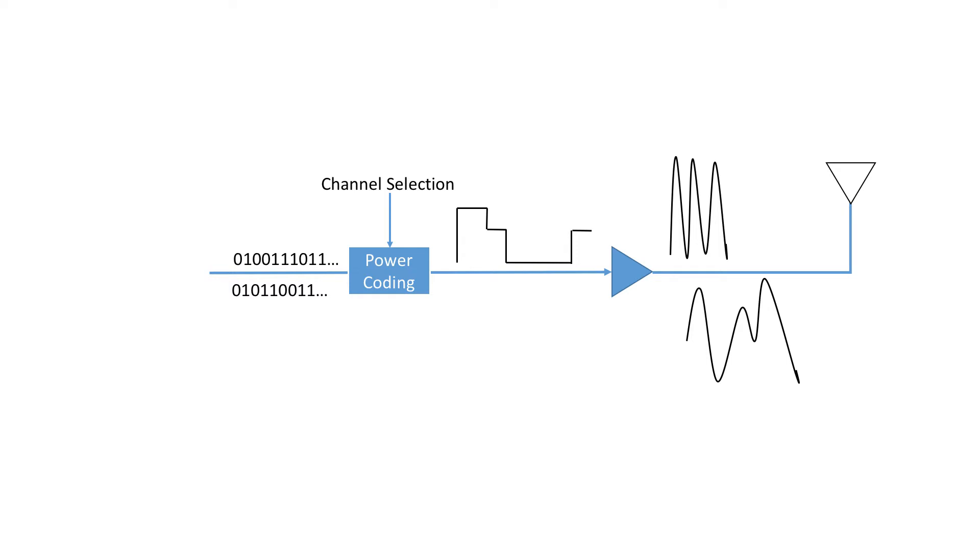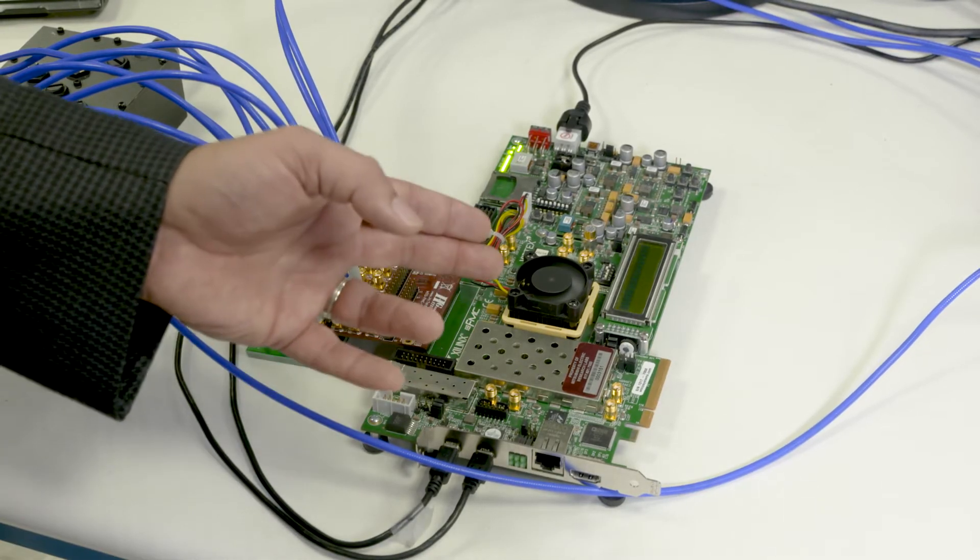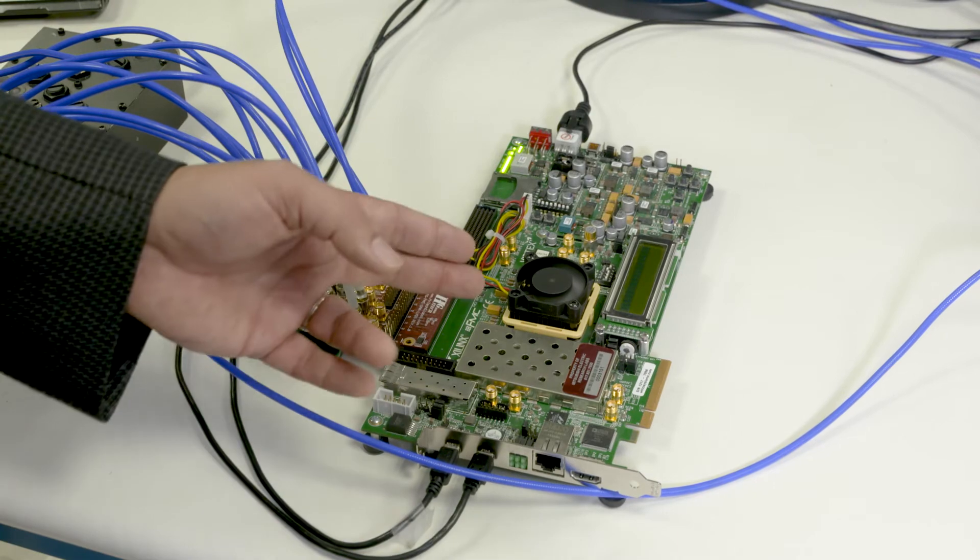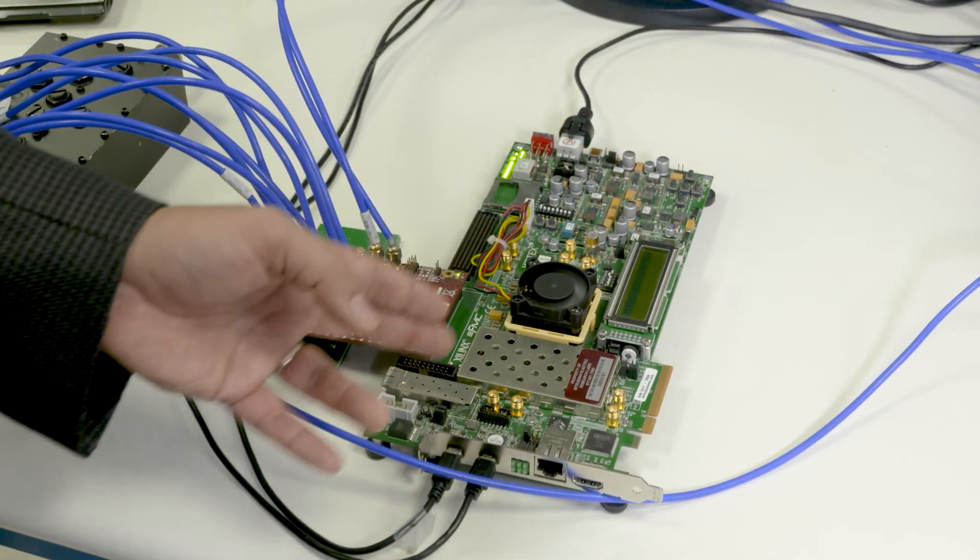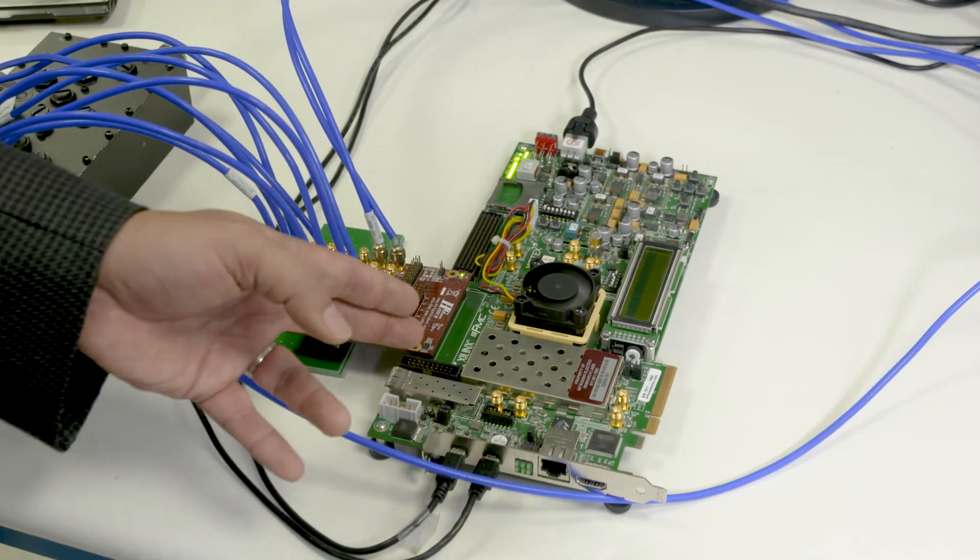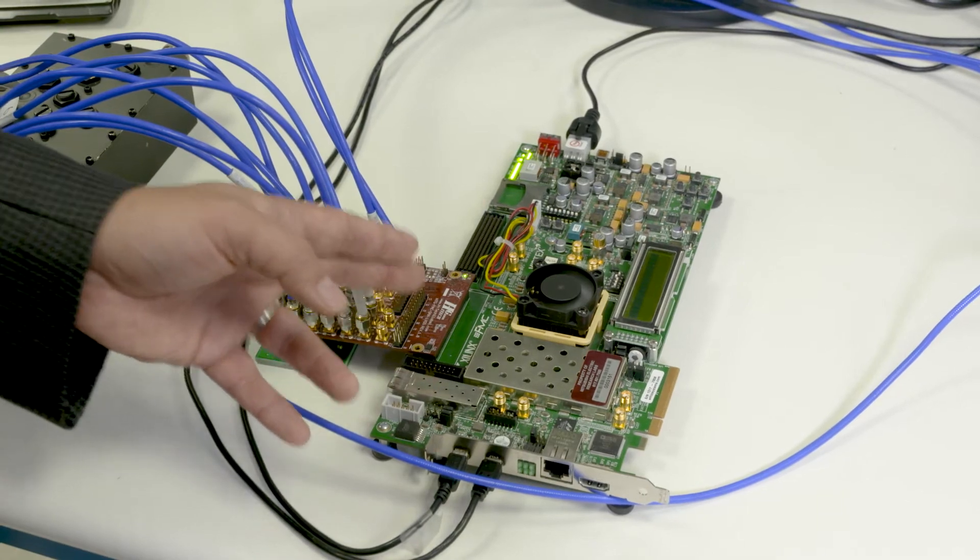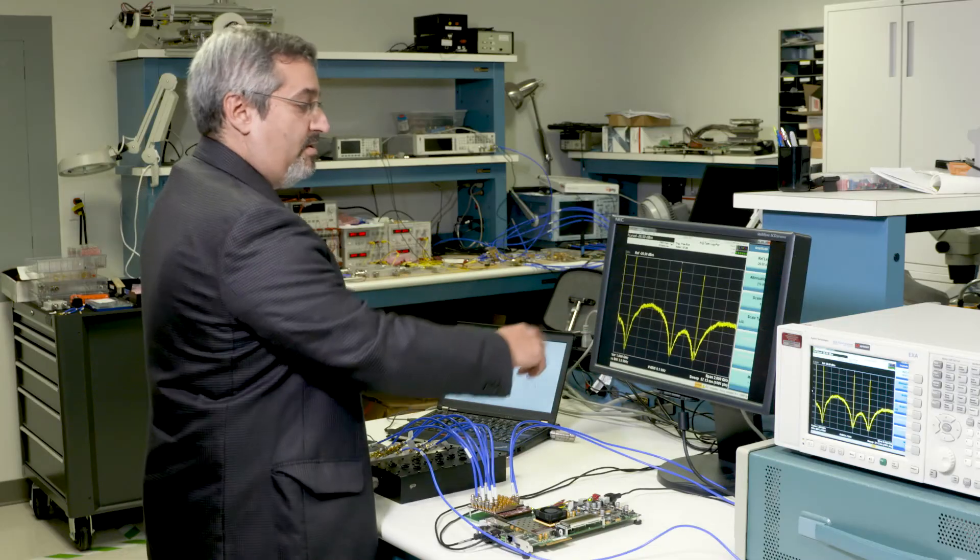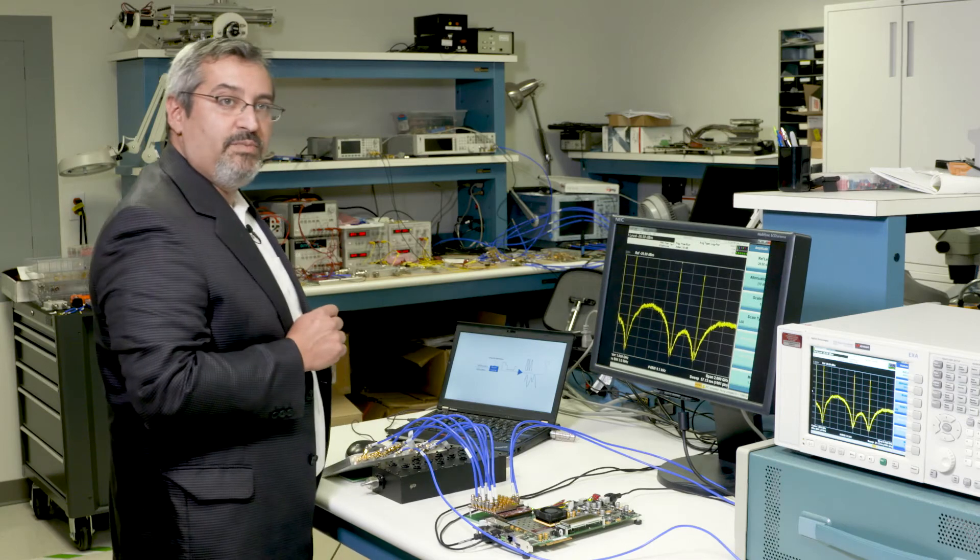So here we have essentially what would be in our cell phone producing multiple data streams, maybe cellular signal, Wi-Fi signal, and possibly other signals, and we're transmitting those on different frequency bands.